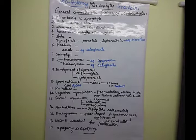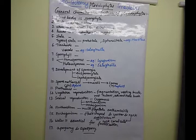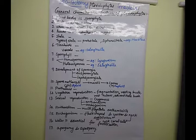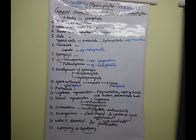Pteridophyte members are called vascular cryptogamae because they develop vascular tissues like xylem and phloem. This is the Devonian period, that's the Pteridophyte era, about 400 million years ago. Examples of Pteridophytes include club moss, horse tail, fern, and water ferns. These are certain examples of species belonging to Pteridophytes.